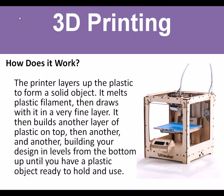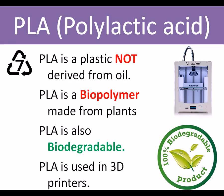3D printing is an important development in plastic — it builds up layers to form a solid object. It's a CAD process so it needs a computer-drawn design. The plastic that 3D printing has started to use is PLA. PLA is a very important plastic because it is not derived from oil — it is made from plants. PLA is a biopolymer and it is also biodegradable. If you bury it in the ground and come back in 100 years, it's gone — it's turned to dirt. PLA is used in 3D printers.